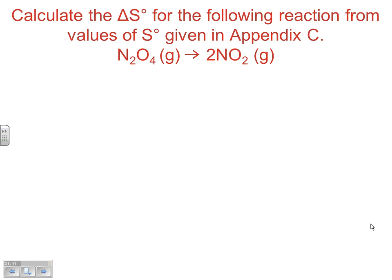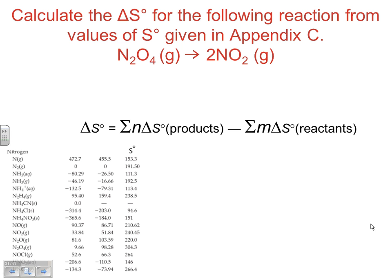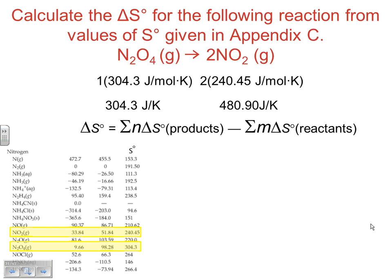In order to do this calculation, we're going to use this formula. From Appendix C, we need to look at NO₂ and N₂O₄. There's one mole of N₂O₄ at 304.3, so 1 times 304.3. We have two moles of NO₂, so 2 times 240.45. That's the total of our reactants and products. Products minus reactants gives us the delta S calculation.